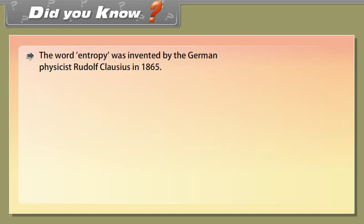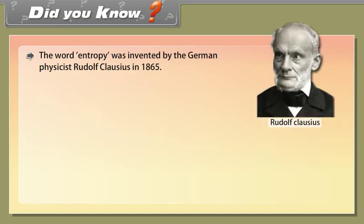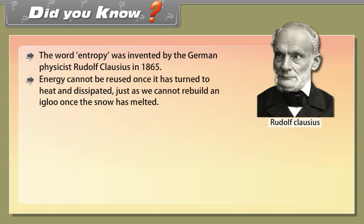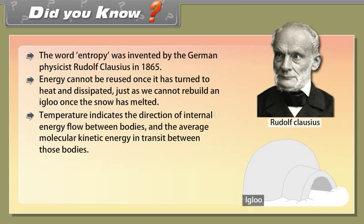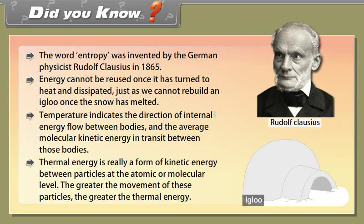Did you know? The word entropy was invented by the German physicist Rudolf Clausius in 1865. Energy cannot be reused once it has turned to heat and dissipated — just as we cannot rebuild an igloo once the snow has melted. Temperature indicates the direction of internal energy flow between bodies, and the average molecular kinetic energy in transit between those bodies. Thermal energy is a form of kinetic energy between particles at the atomic or molecular level; the greater the movement of these particles, the greater the thermal energy.